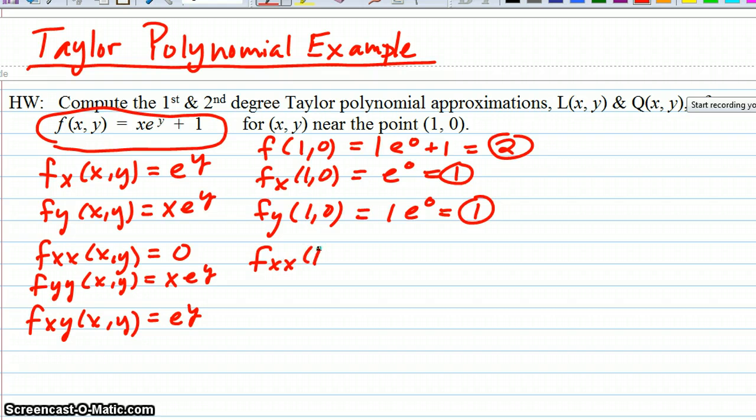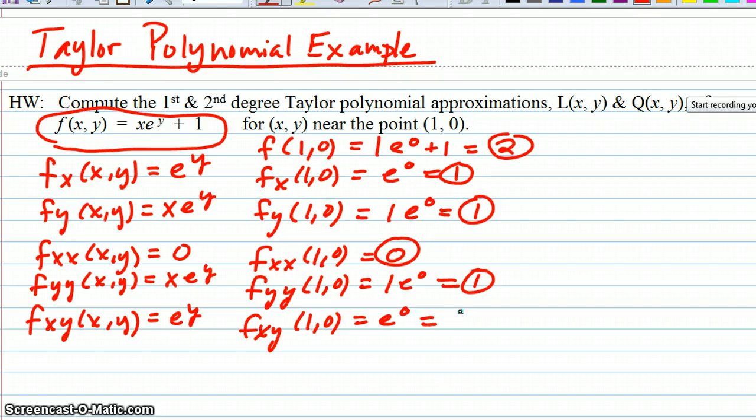F sub xx at (1,0), doesn't really matter what the input is, it's always 0. F sub yy at (1,0) is equal to 1 times e to the 0 or 1. And f sub xy at (1,0) is equal to e to the 0 or 1.